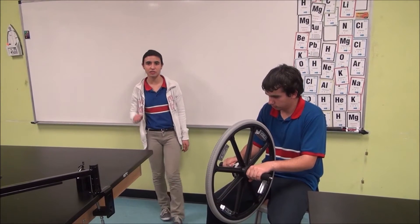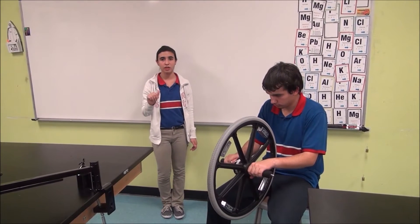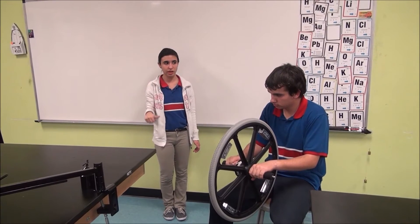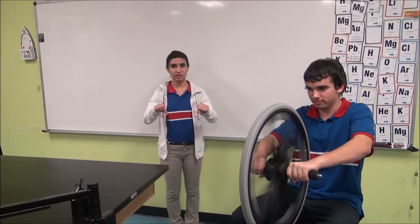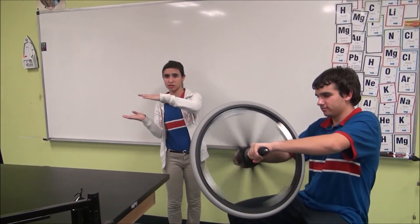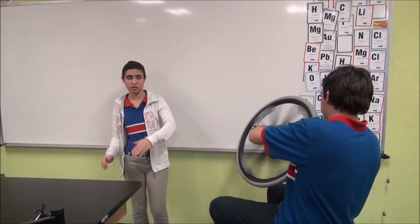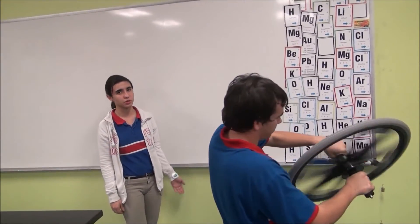Bicycle's right hand rule states that as the wheel rotates this way, the force will be in this way and the torque will be towards the direction of my thumb. As he rotates the wheel in this direction, force will be applied in this direction, causing him to move in the same direction.